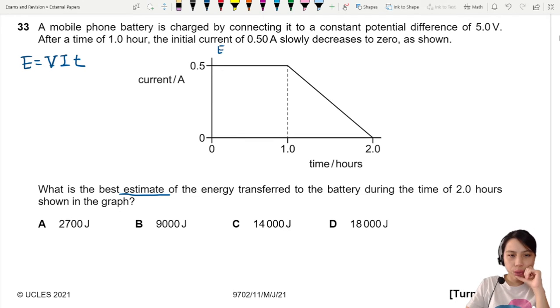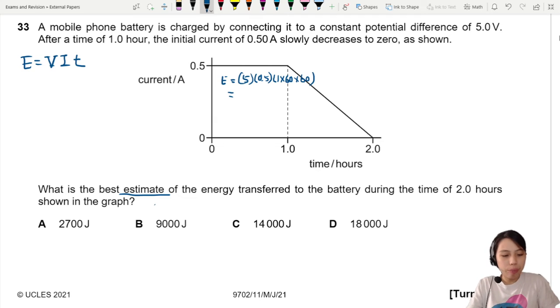E equals VIT. This will become E equals 5 volts, current is 0.5, and this is one hour. How to do one hour? We need to convert to seconds because it's in joules. So one hour, 60 minutes, each minute is 60 seconds. We can multiply like that. So this will give us 9,000 joules for this part one.